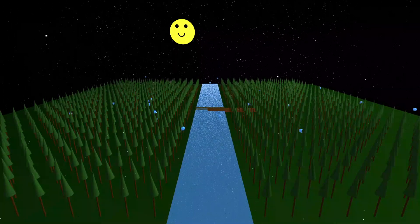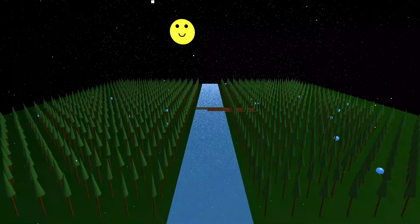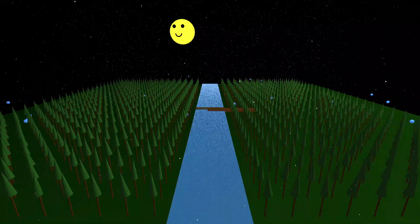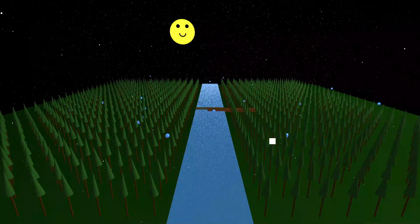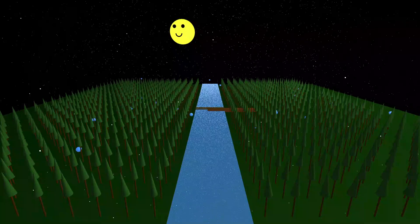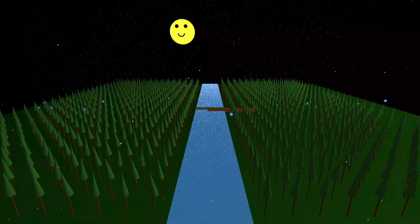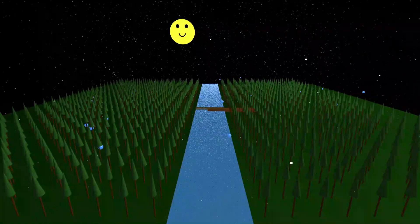So what exactly are these diffusion models? Imagine you have this stunning photo and you start adding digital static to it. Slowly, the image gets lost in the noise until it's completely gone. The magic happens when you train an AI to reverse that process. Starting with pure noise and guided by your prompts, it slowly removes that noise step-by-step to generate something totally new.